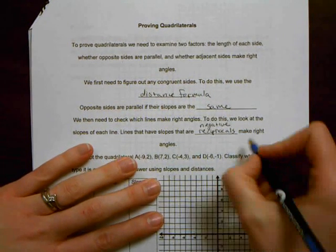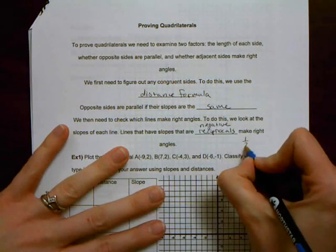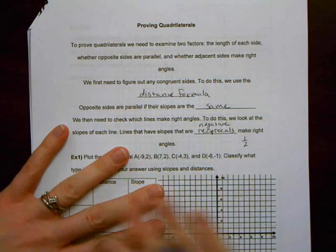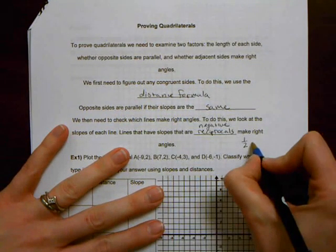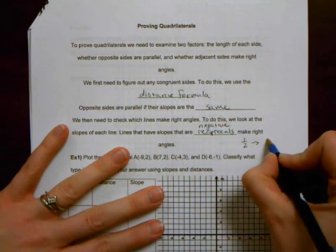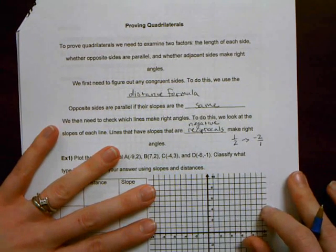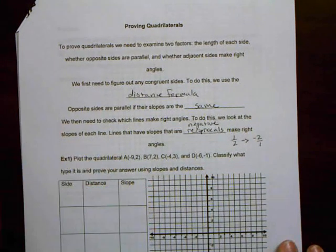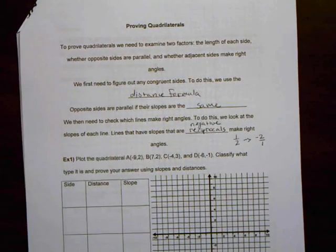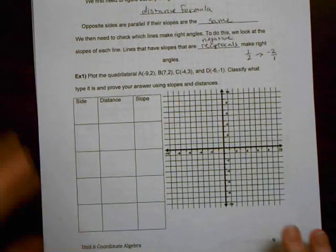Slopes that are negative reciprocals make right angles. And what a negative reciprocal means, in case you don't remember, is for example, if I had a slope of one half on one line, then if it makes a 90 degree angle, the adjacent line would have a slope of negative two over one, because I would flip that slope and change the sign of it. Alright, so let's go ahead and dive into an example.